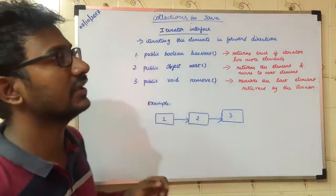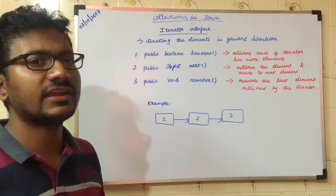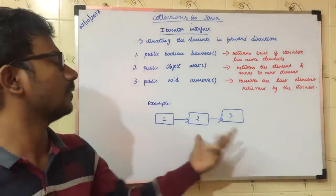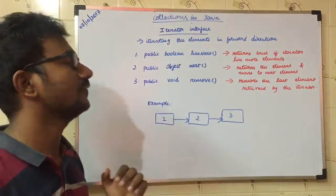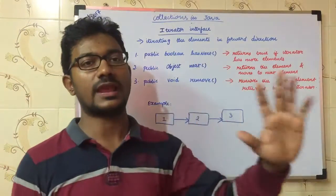What is the Iterator interface? I will show you an example of the Iterator interface. The Iterator interface is used to iterate the elements in the forward direction.